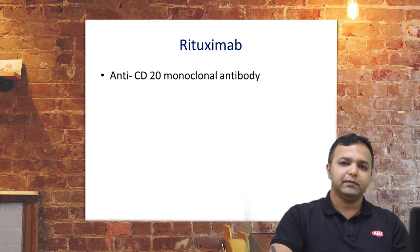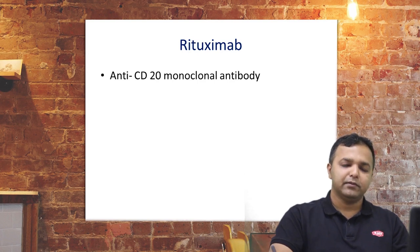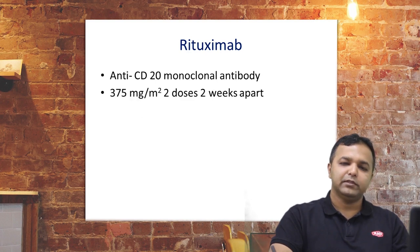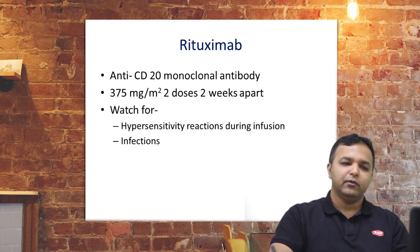Rituximab is an expensive but promising drug. It is an anti-CD20 monoclonal antibody that can be given in cases of steroid-dependent nephrotic syndrome, and has even been tried in steroid-resistant nephrotic syndrome. The dose is 375 mg/m², given in two doses two weeks apart. Watch for hypersensitivity reactions during infusion and infections.